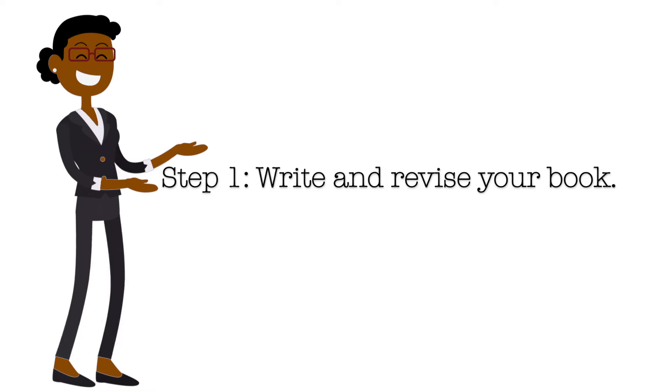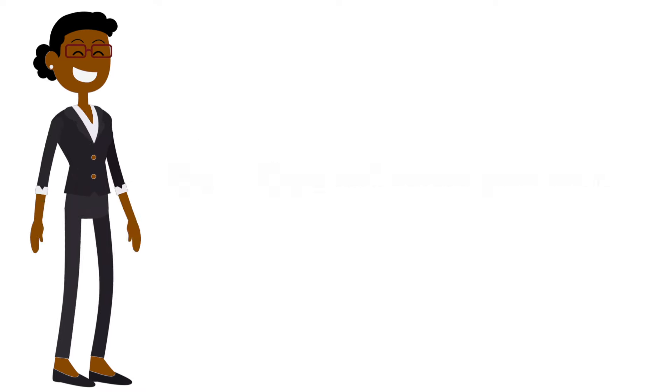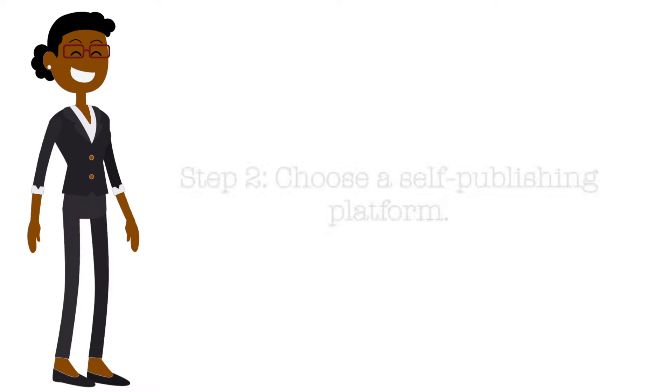In this video I will show you the step-by-step process for publishing your book. Step number one is to write and revise your book. It's important that you have a finished version of your manuscript before you start the publishing process. Once you have written your manuscript, make sure that you have revised it and edited it carefully so that it can be the best version possible.